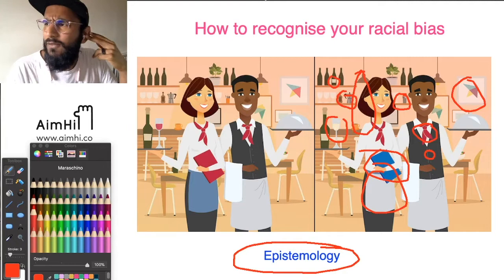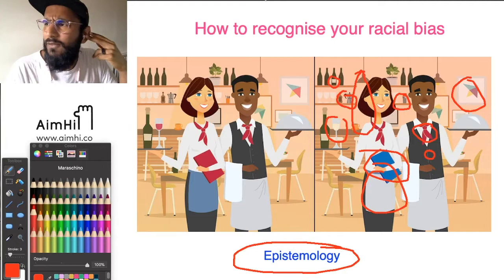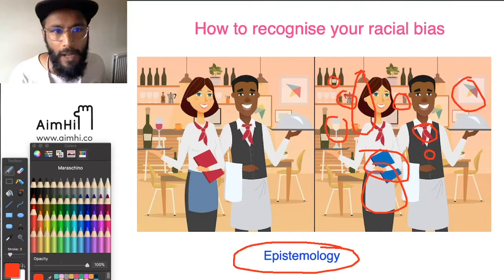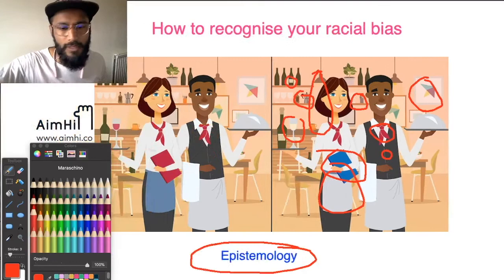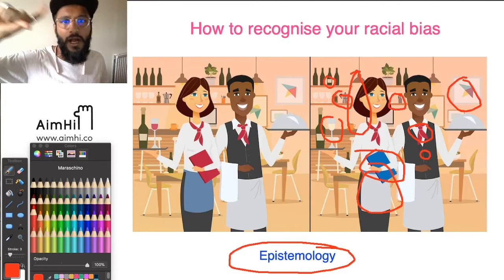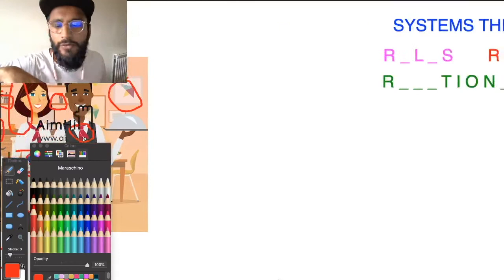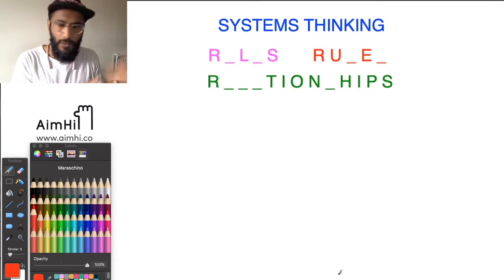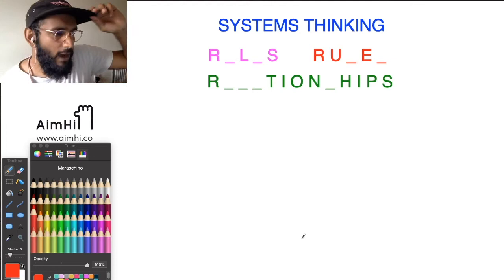Even a few weeks ago when we looked at 'do we live in a simulation?' we were looking at these questions of knowledge, so some of that stuff will come back up today. As a side note, this week is building on last week's lesson — questions about thinking about the world in terms of systems and how that might challenge some of our assumptions about how moral claims work. We're going to do a quick revision on what it means to see the world in terms of systems before we get into today's lesson.